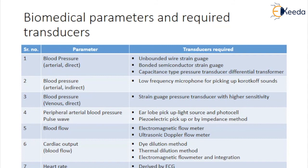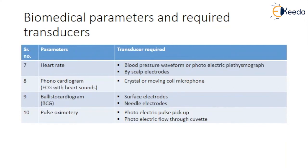For blood flow measurement, the transducers used are an electromagnetic flow meter and an ultrasonic Doppler flow meter. For cardiac output, it is measured by dye-dilution method, thermal dilution method, or an electromagnetic flow meter with integration. Heart rate is derived from ECG and measured by blood pressure waveform or photoelectric plethysmography, and can also be measured by different electrodes mounted on the scalp of the patient. Next is the phonocardiogram — phono means sound and cardio means heart — so it is ECG with heart sounds, measured with a crystal or moving coil microphone.